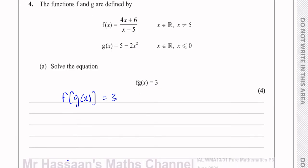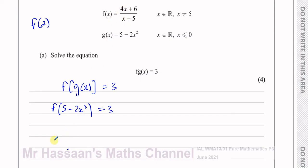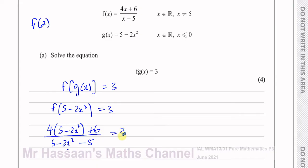The function g(x) is 5 − 2x². So we take f and substitute 5 − 2x² in place of x. Instead of 4x we get 4(5 − 2x²), plus 6 over (5 − 2x²) minus 5. We equate that to 3 and solve this equation.